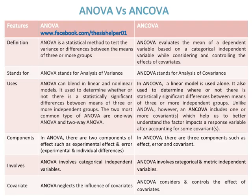In ANOVA, there are two components of effect such as experimental effect and error, including experimental and individual differences. While in ANCOVA, there are three components such as effect, error, and covariant.